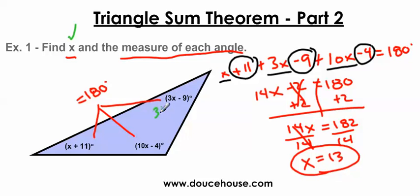So I know 3 times, that's hard to see, let me go with a different color here. We know that 3 times 13 is 39. 39 minus 9 is 30 degrees. So this angle is 30 degrees.